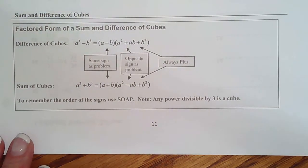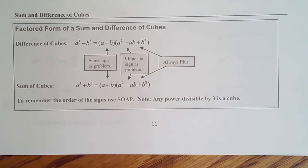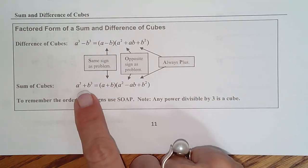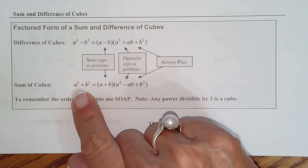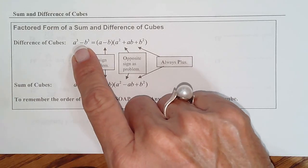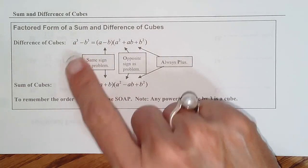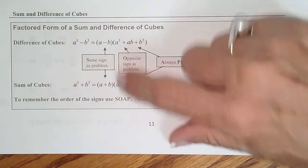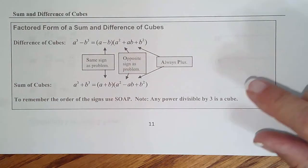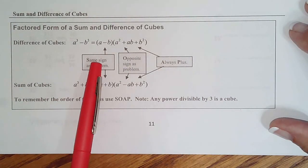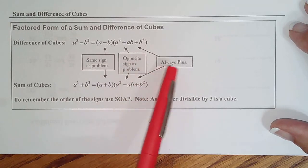Okay, our last two factoring patterns are both cubes. Cubes are different than squares because we can have a minus or a plus. So squares can only have a minus. That's why it's called difference of squares. But cubes can be plus or minus. And then the factoring pattern is the same. The only thing that differs is signs.